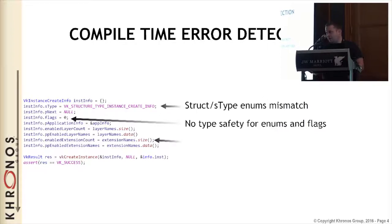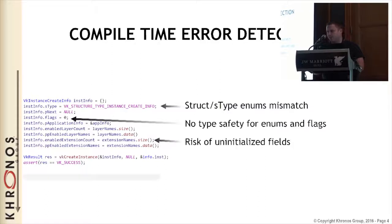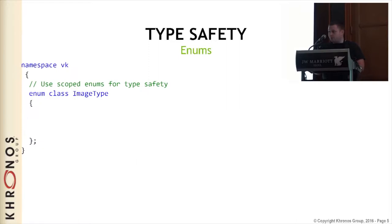Hopefully the validation layer catches it if you use it - everyone should use a validation layer during development. And finally, it's also possible if you have 20 fields that you forget to set one. I've seen this also multiple times. So the question is: what can we do about it?